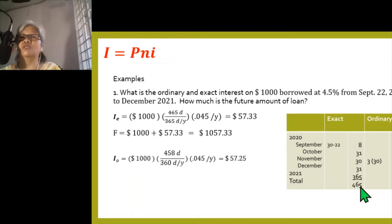For ordinary interest: September gives 8 days. October through December is 3 months, so 3 times 30 equals 90 days. For 2021, you consider it as 360 days. So that gives a total of 458 days for the ordinary interest calculation.